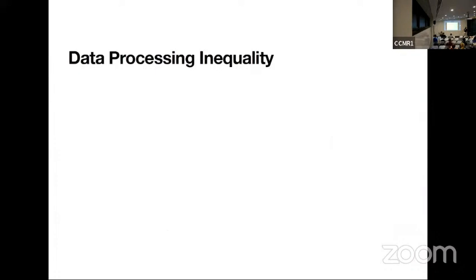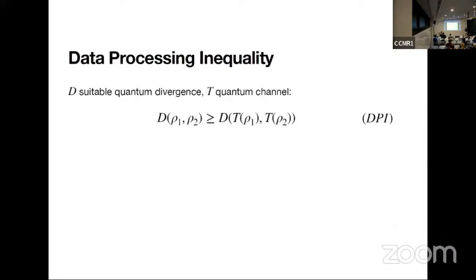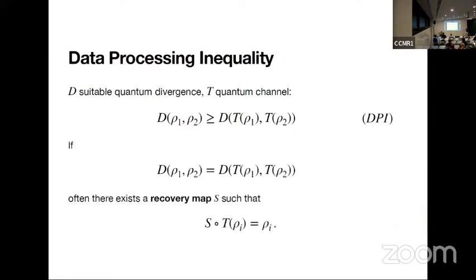I'm going to start by stating the data processing inequality. Many of you are probably familiar with it. Given you have some quantum divergence and a quantum channel, if you apply your channel to a pair of states, this pair of states cannot become more distinguishable with respect to this divergence that satisfies the DPI. Many quantum divergences additionally satisfy a recovery map result, most famously due to Petz and his family of Rényi divergences and the quantum relative entropy.